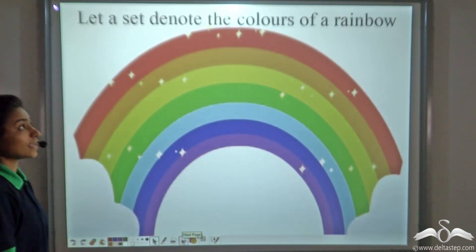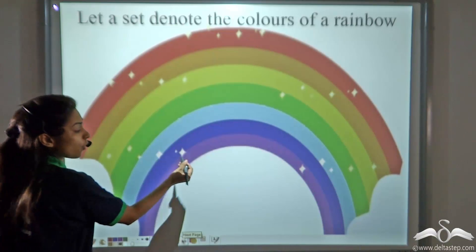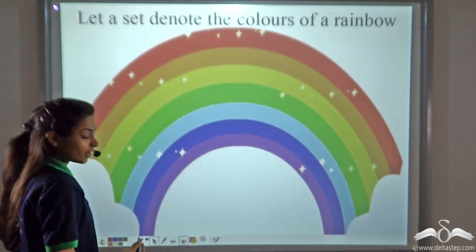Now, let a set A denote the colours of the rainbow. What are the colours of the rainbow? Violet, Indigo, Blue, Green, Yellow, Orange and Red.